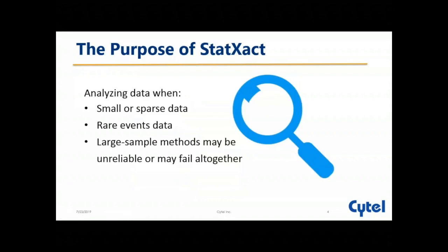The purpose of StatExact: so when so many asymptotic methods were already available, why was StatExact developed? Even though in statistics people have been using asymptotic methods, there are certain cases where we cannot rely on asymptotic inference — like smaller or sparse data. When data is small, it doesn't follow the central limit theorem, or data is sparse with many zeros, or data has rare events phenomena. In such cases, asymptotic assumptions are not valid and we cannot rely on the inference obtained from asymptotic probability distributions. In general, whenever large sample theory is not reliable, one has to go for permutational inference — and that's what we do in StatExact.